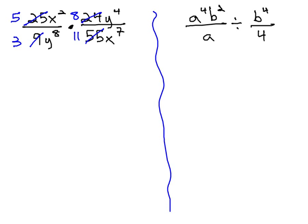Now, we could multiply the fractions straight across. 5 times 8 is 40. We also have an x squared and a y to the 4th. 3 times 11 is 33. We also have x to the 7th and y to the 8th.